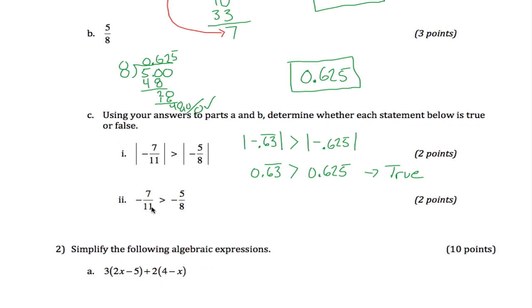Now we do it again. Now we got negative 7 elevenths, and we want to know, is that greater than negative 5 eighths? Well, let's see, negative 7 elevenths is negative 0.63, and negative 5 eighths is negative 0.625. This one is kind of tricky. You might think that this is bigger than this because this number is bigger, but a greater than sign, another way to think about it is to the right of on the number line.